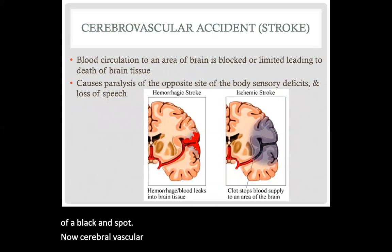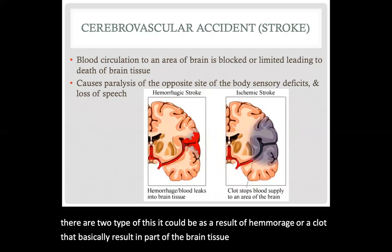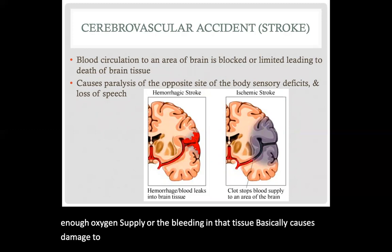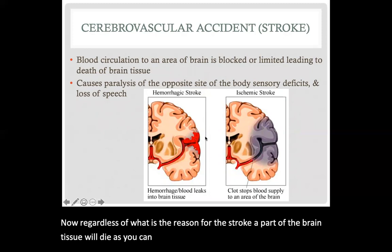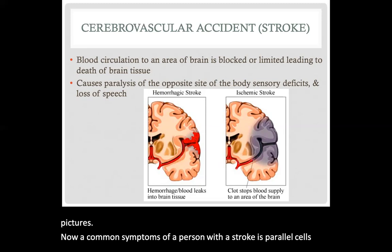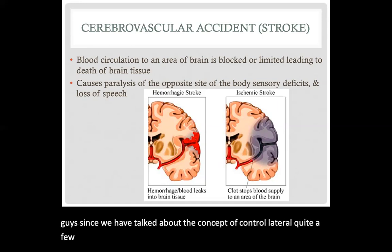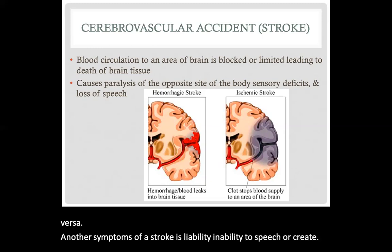Cerebrovascular accident, commonly known as a stroke, has two types. It can result from hemorrhage or a clot, which causes part of the brain tissue to either not receive enough oxygen supply, or the bleeding in that tissue causes damage to neurons in the area. Regardless of the reason, part of the brain tissue will die, as seen in the blackened area in these pictures. A common symptom of stroke is paralysis on the opposite side of the body — this should be familiar, as the right side of the brain controls the left side of the body and vice versa. Other symptoms include inability to produce speech and sensory deficiencies.